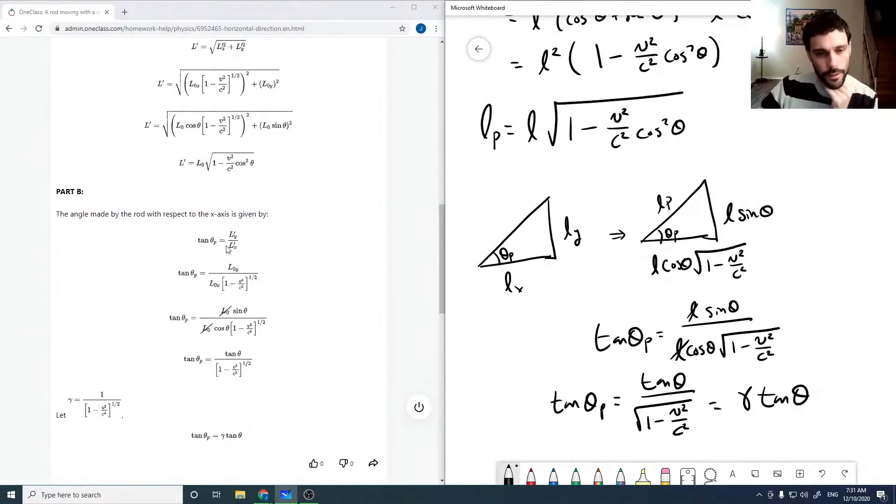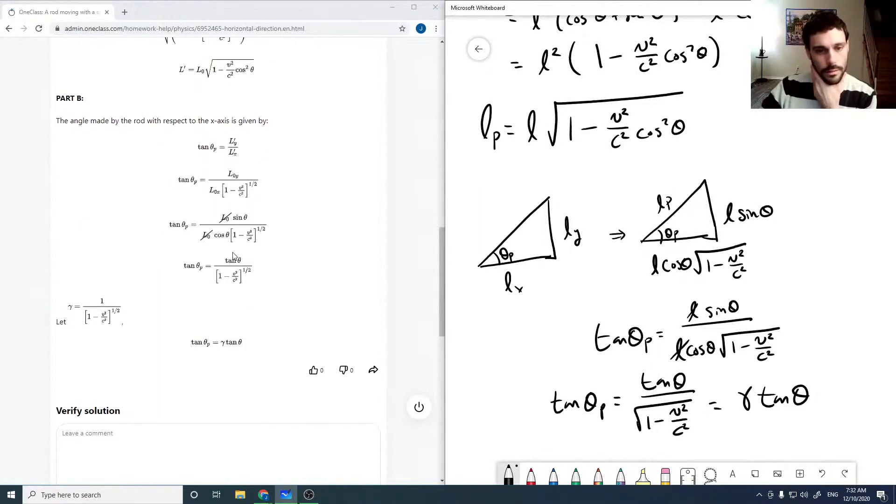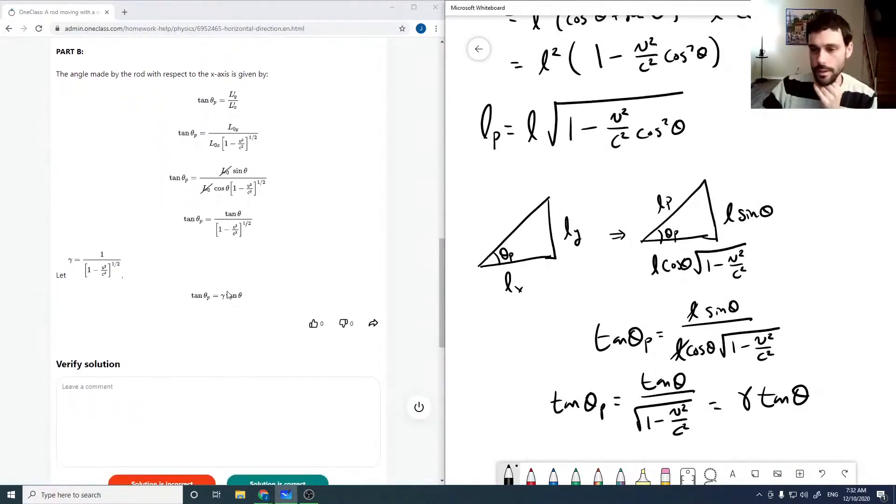And then for the angle, it's the old Y divided by the new X. And so gamma is this term, so then tan theta P is gamma tan theta. So that looks good. So that's good. Solution is correct. Oh my god.